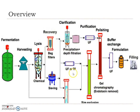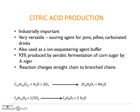Once sieving is done, we go for clarification — the concentration step — using precipitation, depth filtration, and ultrafiltration. After clarification, purification follows using ultrafiltration, size exclusion, and chromatography techniques like gel chromatography. Once purified, we go for polishing or formulation — drying, crystallization, and more. After formulation, it goes to filling to produce the finished product.